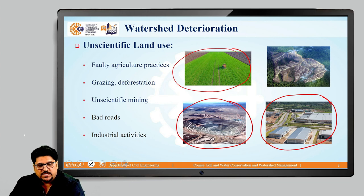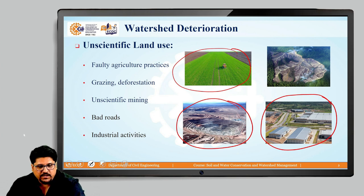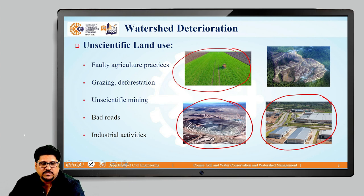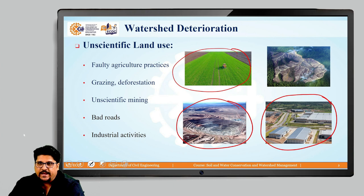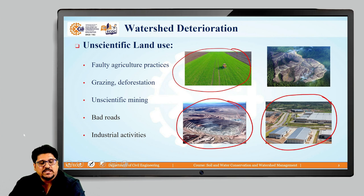Another major issue as far as the watershed is concerned is people's apathy — people are not concerned about the resources within the watershed. They are not bothered about planning, and their participation in the activities where it should be considered is not there. This also leads to watershed deterioration. As far as watershed management is concerned, people's participation plays a very important role.